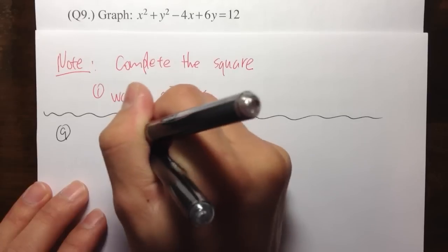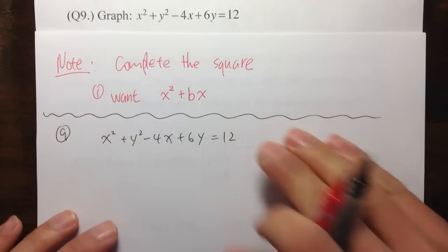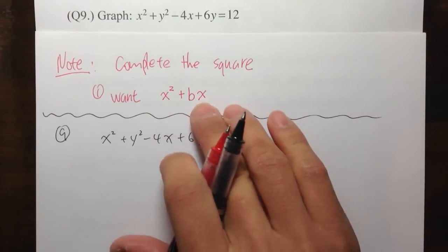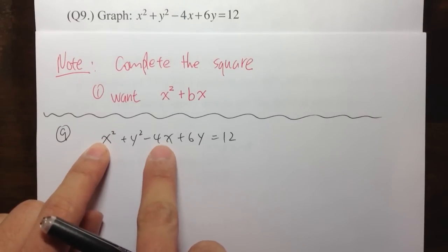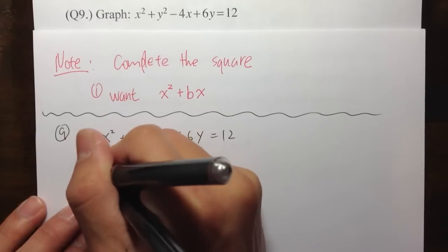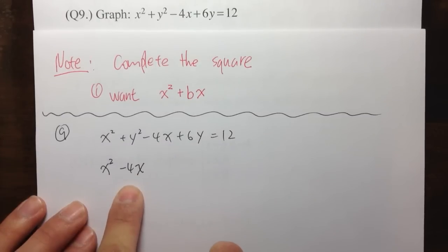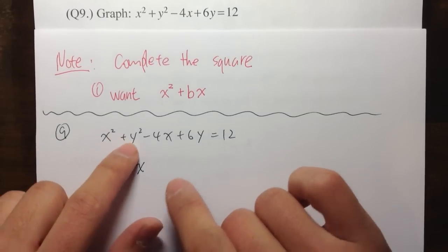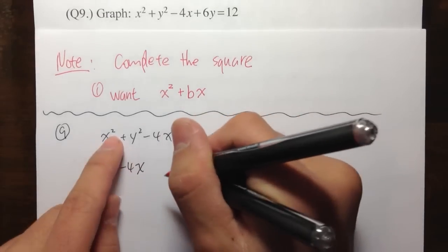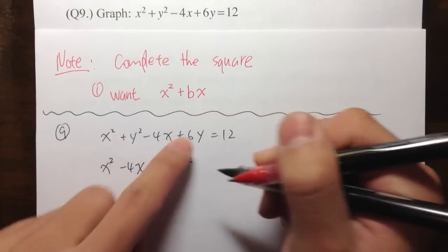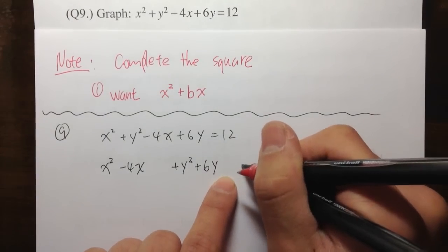I have x squared plus y squared minus 4x plus 6y is equal to 12 — that's the original equation. I want to see the x squared and the x together, so I will first write x squared minus 4x. Then I also want to put the y squared plus 6y together, leaving a gap. So I write plus y squared plus 6y, leaving a gap again, and that's equal to 12.